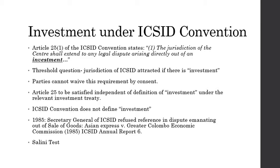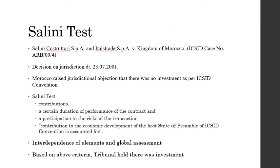The leading decision on the point is by an arbitral tribunal in the case of Salini Constructori vs. the Kingdom of Morocco, which was decided on 23 July 2001. The Salini test was propounded by a three-member ICSID tribunal in its 16-page decision on jurisdiction in a dispute between Salini and Morocco that arose out of a construction deal. Morocco raised several jurisdictional objections in the dispute, including the objection that there was no investment as per the BIT and the ICSID Convention.